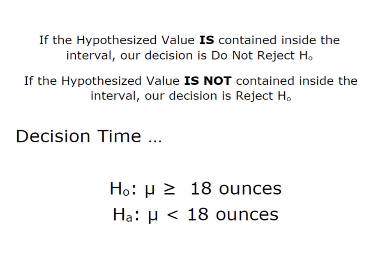So remember when we're dealing with the confidence interval approach, if the hypothesized value of the parameter is contained inside the interval, our decision is to not reject H₀. On the other hand, if the hypothesized value is not contained in the interval, then we will reject H₀.